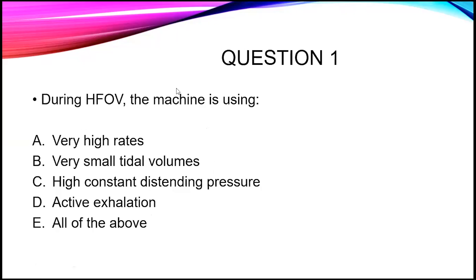We need this session to be interactive. The question is: during high frequency oscillatory ventilation, the machine is using what — very high rates, very small tidal volumes, high constant distending pressure, active exhalation, or all of the above? Nearly all of you chose the last option — all of the above — because yes, all of these are the basic principles for high frequency oscillatory ventilation. The machine uses all of these things to achieve proper gas exchange.